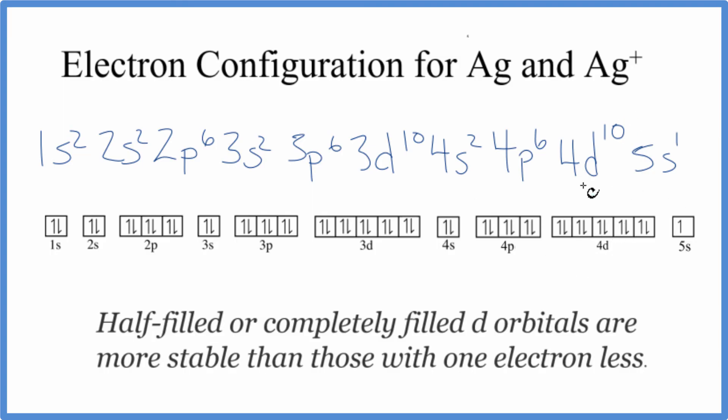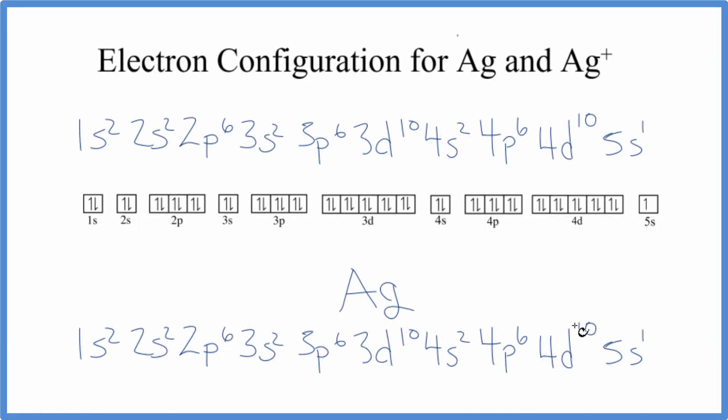Using that information, let's do the electron configuration for Ag+. Here's silver again. To become positive, we need to lose an electron. We need to lose a negative charge.